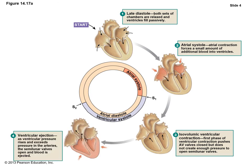Pressure has now risen enough and we enter ventricular systole — the ejection phase. The pressure has risen so much that the aortic and pulmonary semilunar valves are forced open, and blood moves into the pulmonary arteries and aorta. The aortic pressure increases dramatically during this time period, and the atria are repolarizing as they go through atrial diastole. They also begin filling passively with blood coming in from the vena cava and the pulmonary veins.